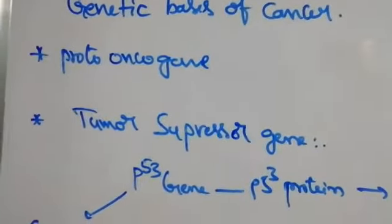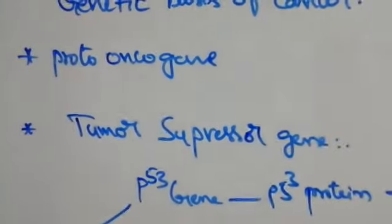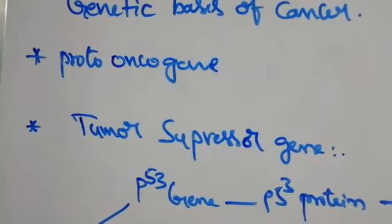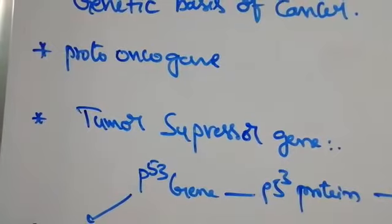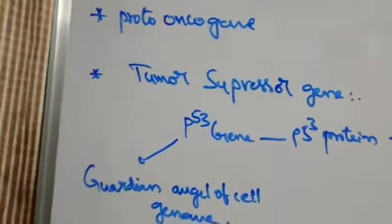Gene bases of cancer. Proto-oncogenes are present in each cell of the body. These proto-oncogenes are mutated then they convert into oncogenes which cause cancer. Tumor suppressor genes.